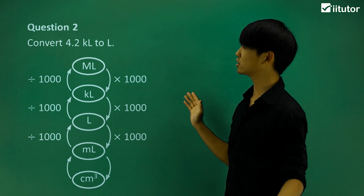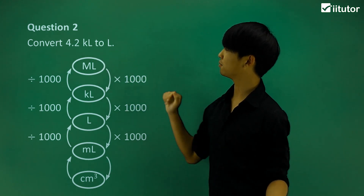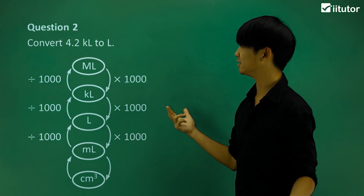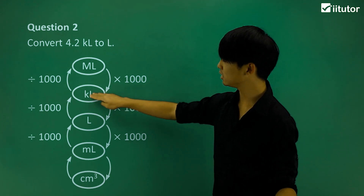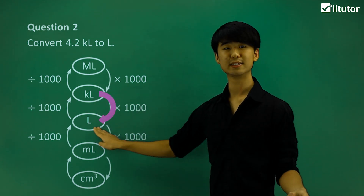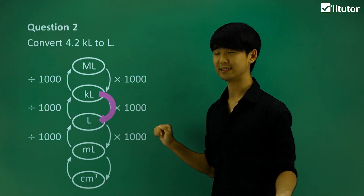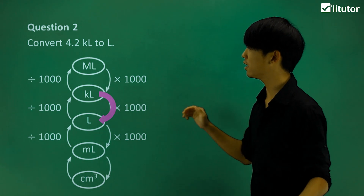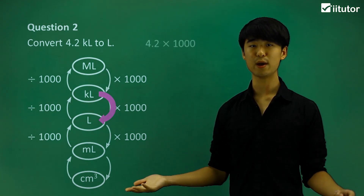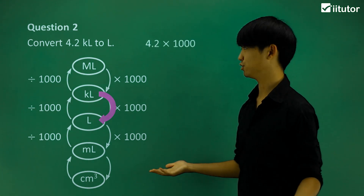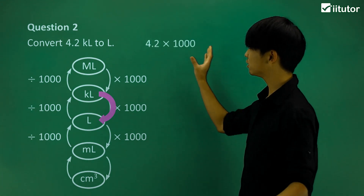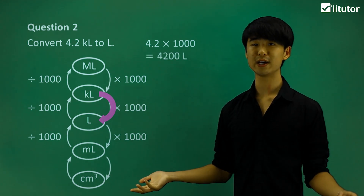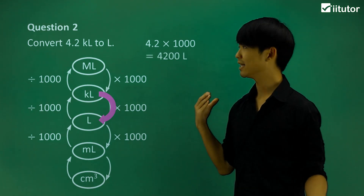Now looking at question number two, we're going to convert from kiloliters to liters — that's from kiloliters down to liters. To do so, we multiply 4.2 kiloliters by 1,000, which gives us 4,200 liters.